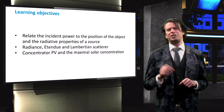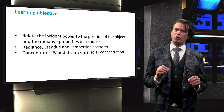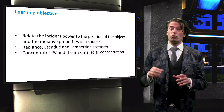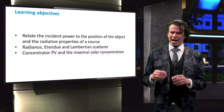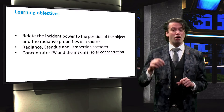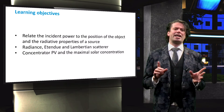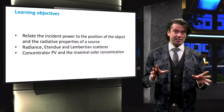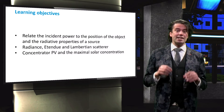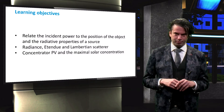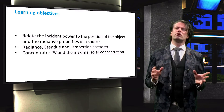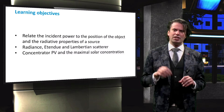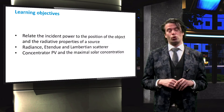The learning objective of this video is to be able to relate the power on the surface of an object to the position of the object with respect to a source and the radiative properties of the source. To that end, we will obtain a basic understanding of the concepts of radiance, étendue, and Lambertian scatterer. Finally, we will use these concepts to discuss concentrator PV and determine the maximum possible solar concentration.